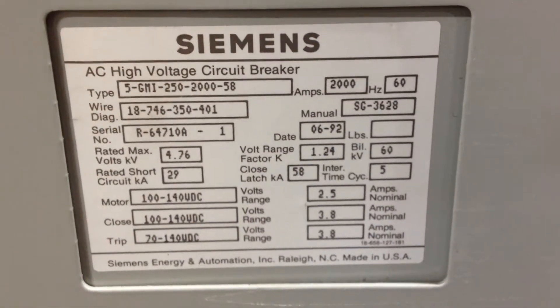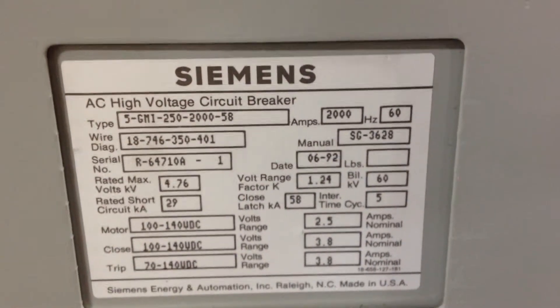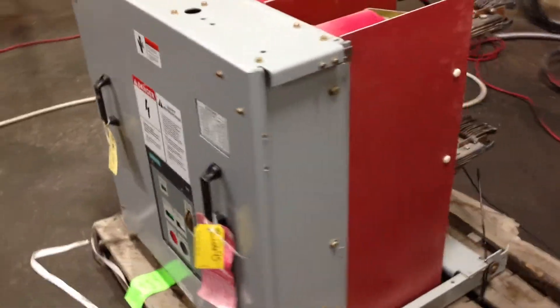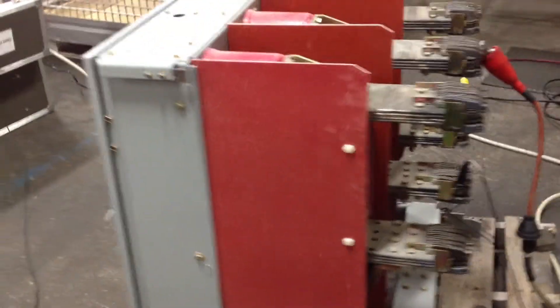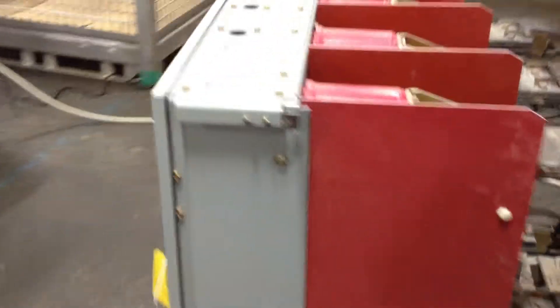Hey guys, we're listening to some good rock and roll right now. We've got a Siemens GMI 250 2000 amp and Aaron is currently hypotting the bottles on these at 11.4 kV. We just got these in, they're stock.